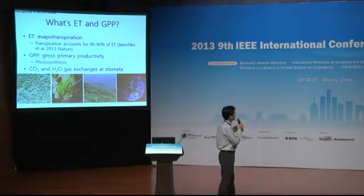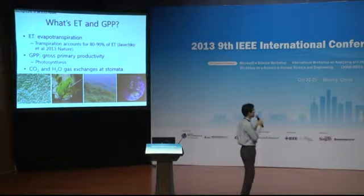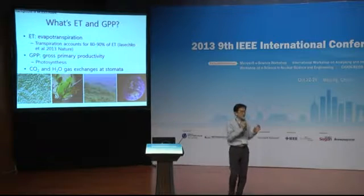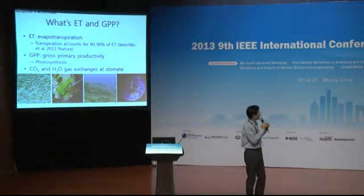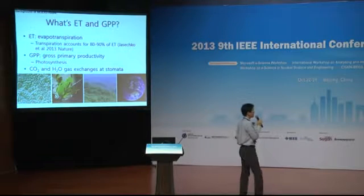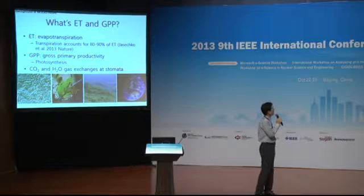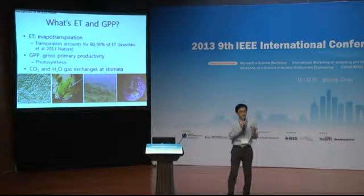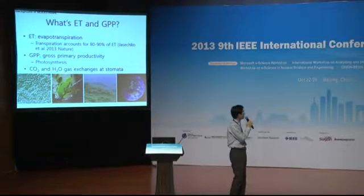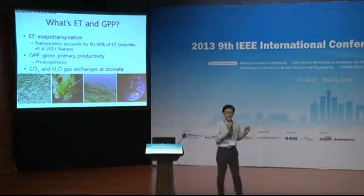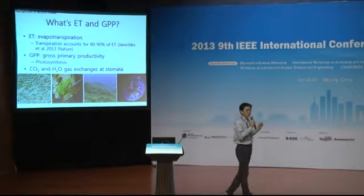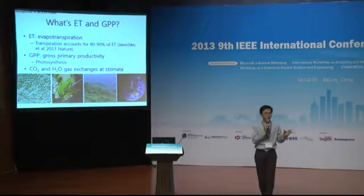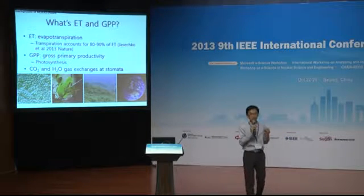Two major variables in my research are ET and GPP. ET is evapotranspiration — the sum of evaporation and transpiration — and transpiration accounts for 80 to 90 percent of global ET. GPP is gross primary productivity, the sum of terrestrial photosynthesis. The CO2 and H2O gas exchanges occur in stomata, tiny pores on the back of leaves, but once integrated over leaf, canopy, forest, and global land, they mainly determine the climate system.